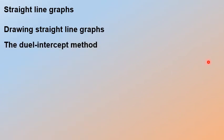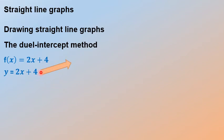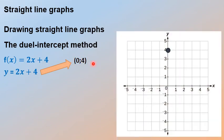The last method — we're going to look at the dual intercept method. If I give you f(x) equals 2x plus 4 — remember f(x) is the same as y equals 2x plus 4. With the dual intercept method, 'dual' means two: you only need two points to draw an accurate line. The first point we already have — that positive 4 at the back, the y-intercept. So if x is 0, y would be 4.